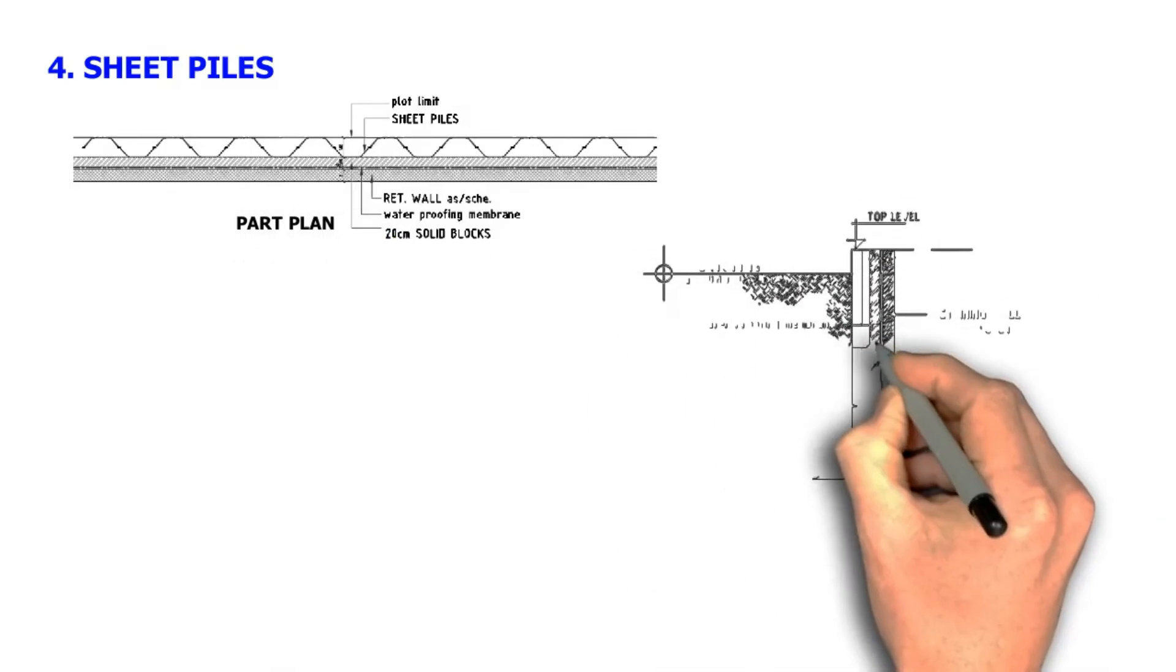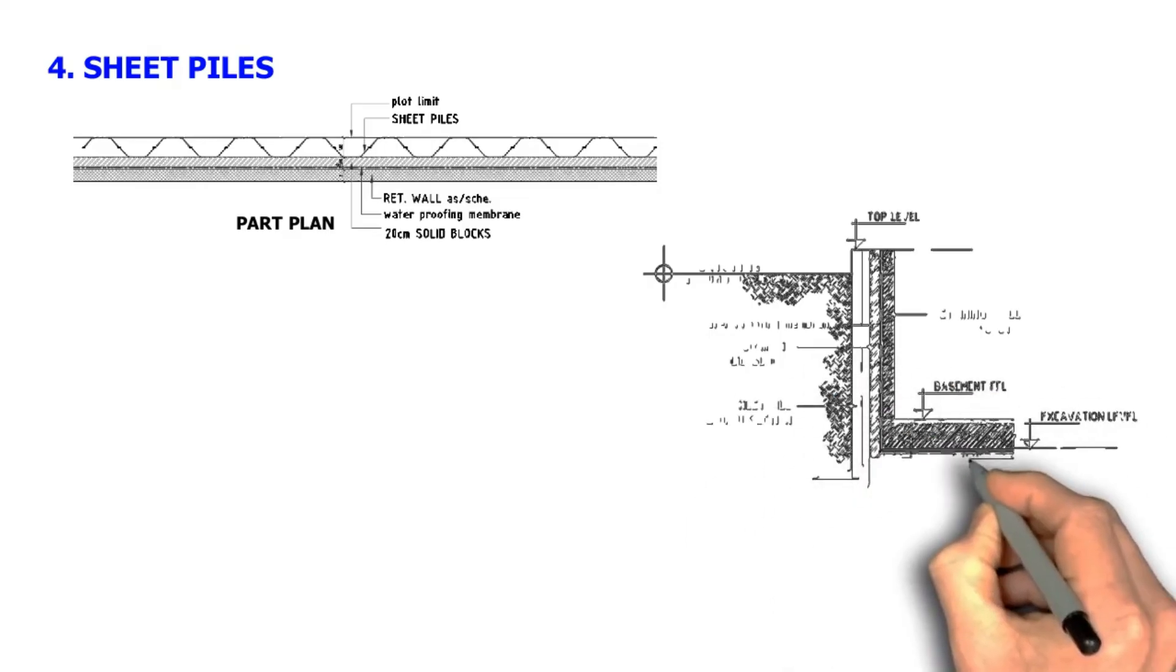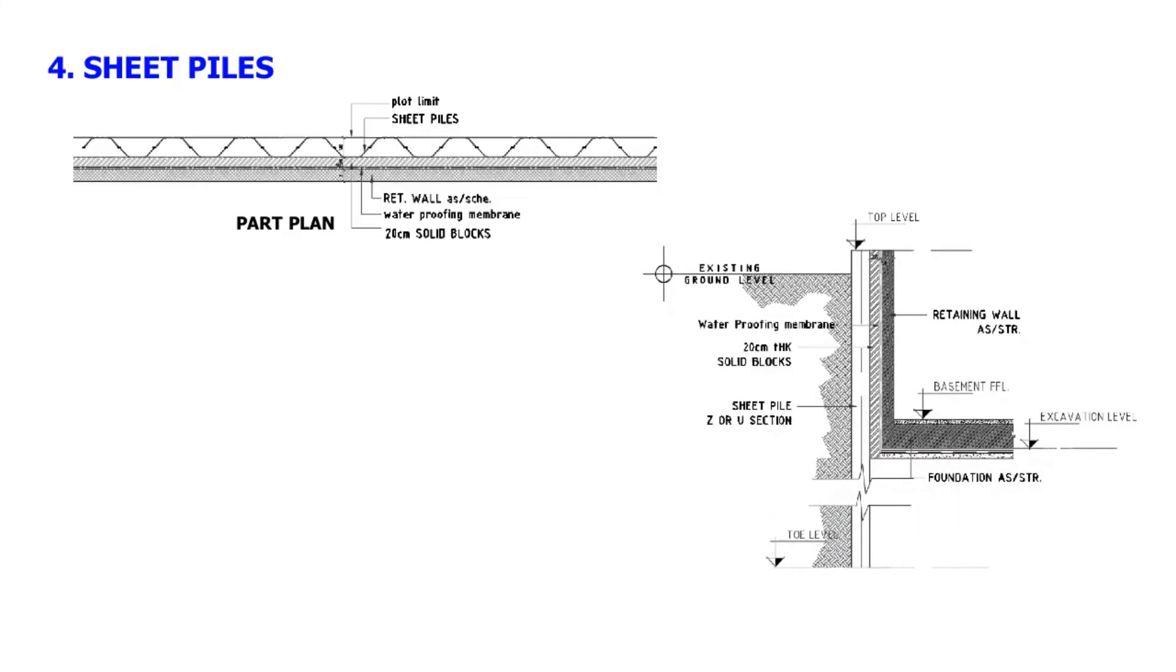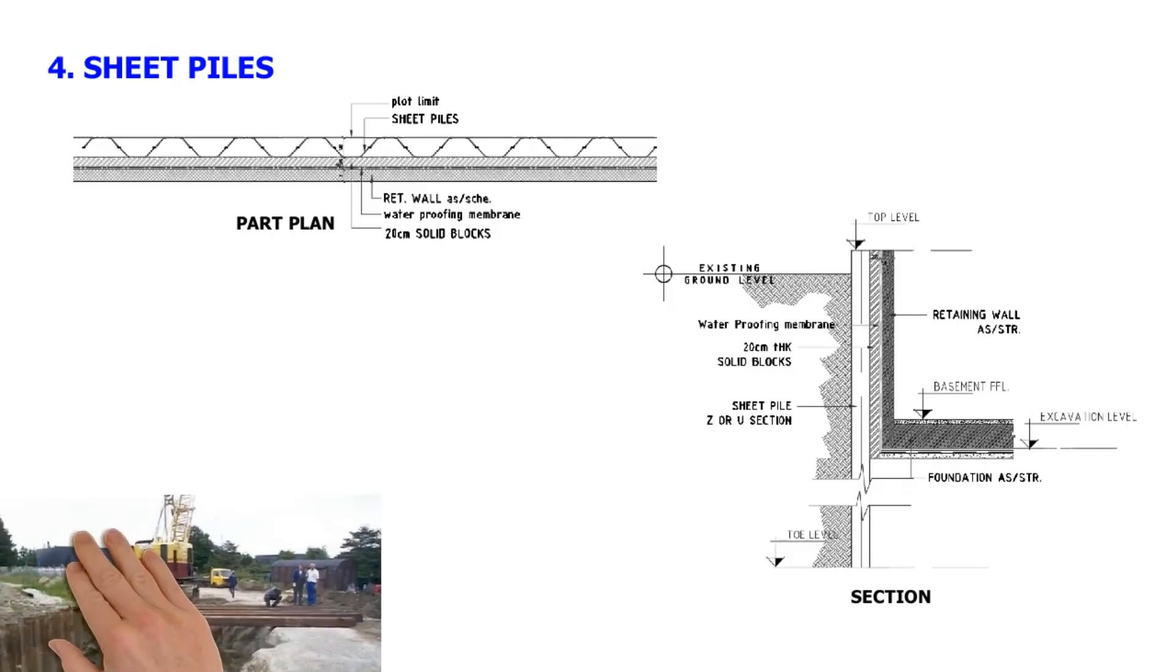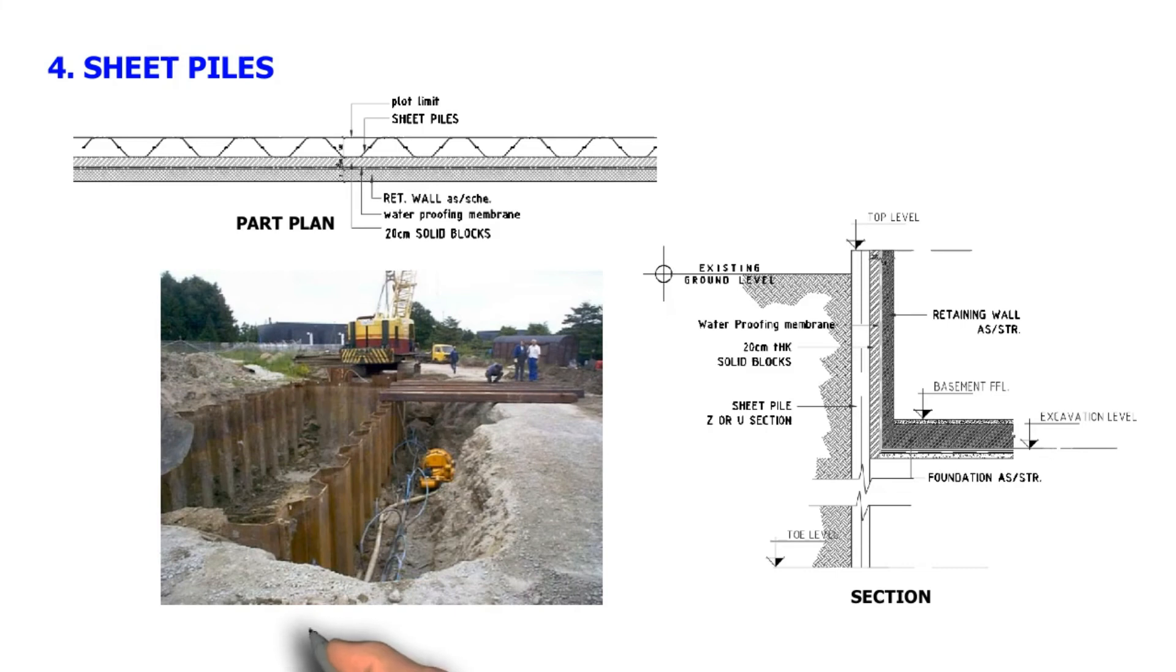Similar to soldier piles, it can be constructed by driving prefabricated Z or U steel sections into the ground using a vibro hammer. The full wall is formed by connecting the Z or U steel sections or sheet piles. Depending on the depth of excavation, the end of the sheet piles, if not long enough, can be welded together to reach the desired depth in the ground.